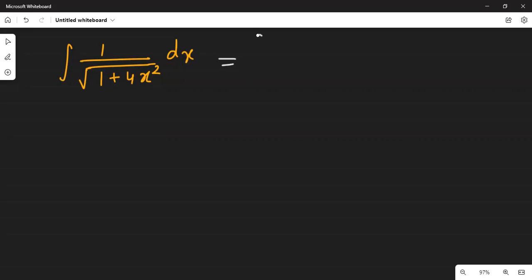So, this can be written as integration of dx divided by square root of 1 plus 4x square, which is 1 plus 2x whole square, isn't it?